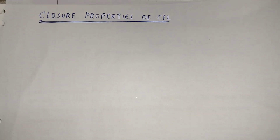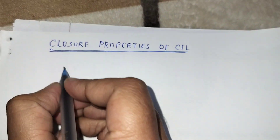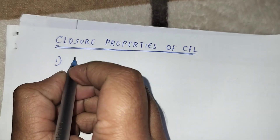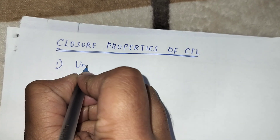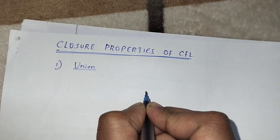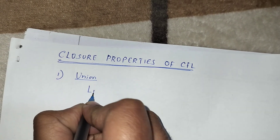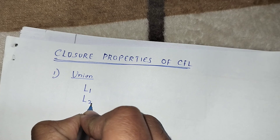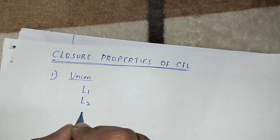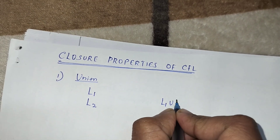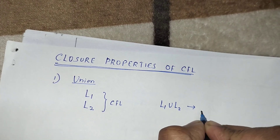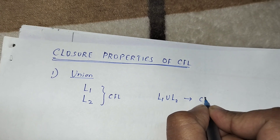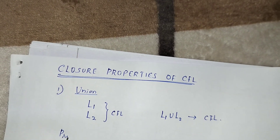The next topic is closure properties of context-free languages. The first closure property: context-free languages are closed under union. That is, the union of two context-free languages is also a context-free language. We are taking two context-free languages L1 and L2, and we are going to show that L1 union L2 is a context-free language. So how do we prove this?